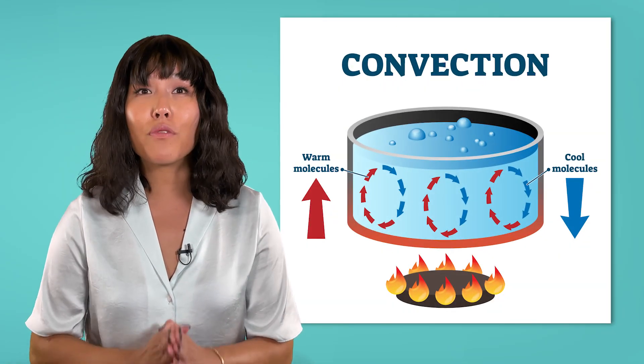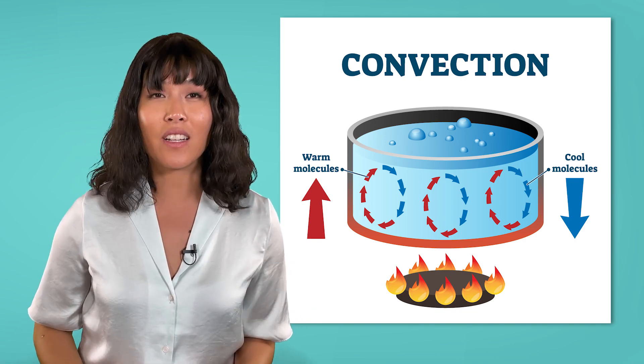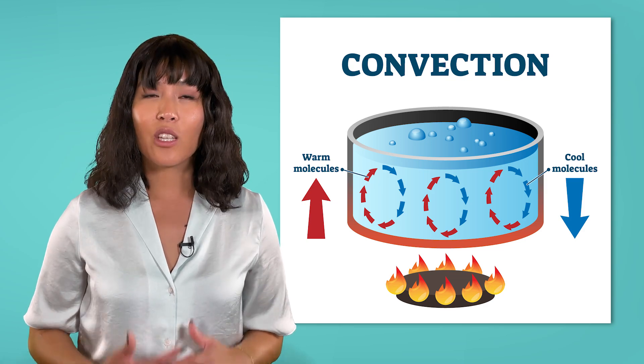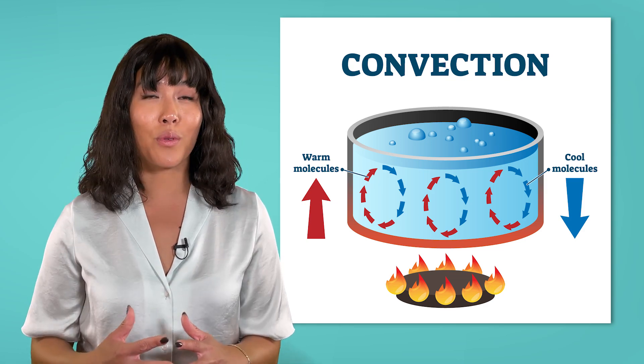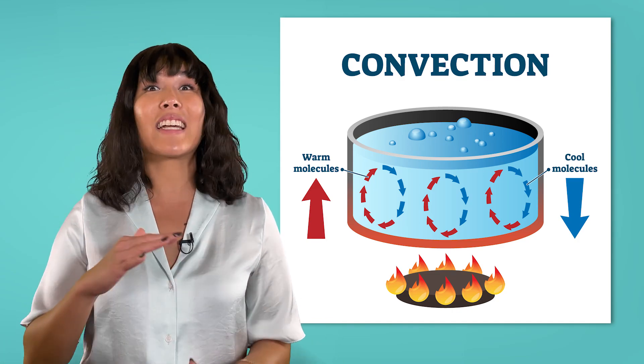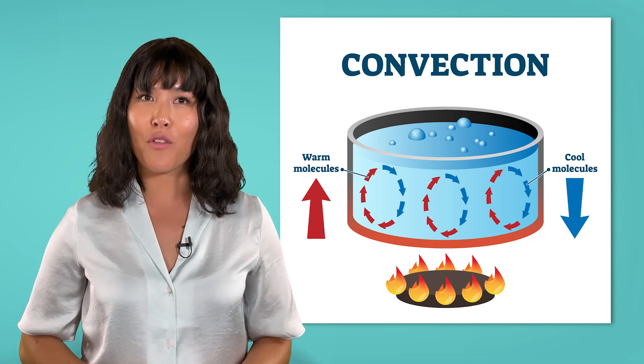In convection, warmer fluid molecules always rise because their faster speed causes them to spread out more, becoming less dense. The cooler, more dense molecules sink to the bottom. This can create a never-ending cycle of sinking and rising as heat is transferred to the bottom of a pot of water.